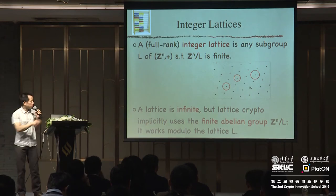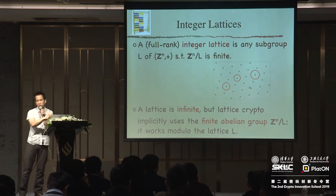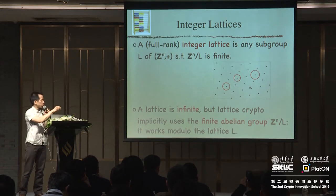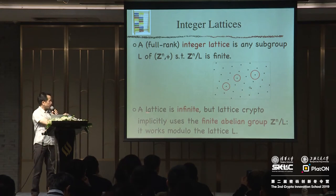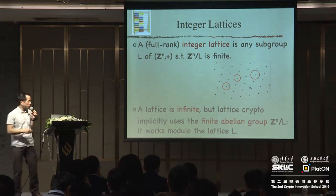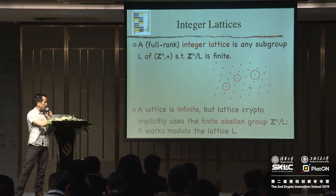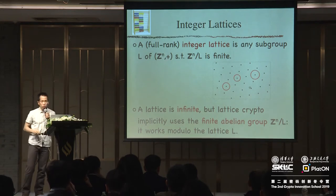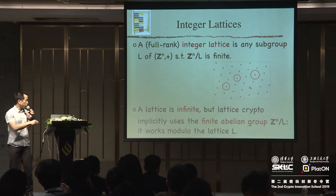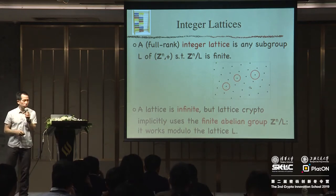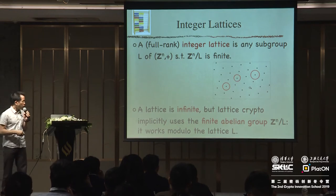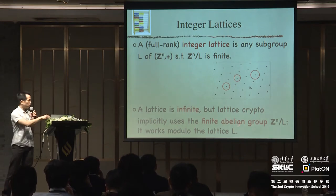This finite quotient group is actually what replaces the RSA group or the elliptic curve group. Something that is often confusing: the lattice itself, L, is infinite, and we don't like infinite sets. But we are actually not working in the lattice directly — we're working with this finite abelian group. The whole trick of lattice cryptography is we work modulo the lattice. That's why in many descriptions of lattice cryptography, we don't see the lattice — we work modulo the lattice.